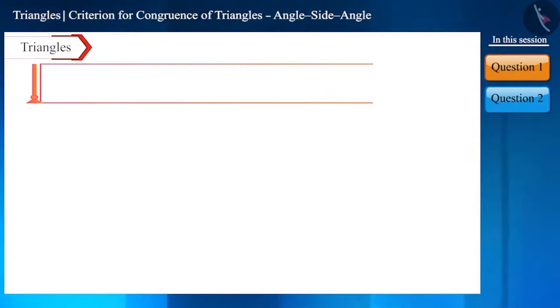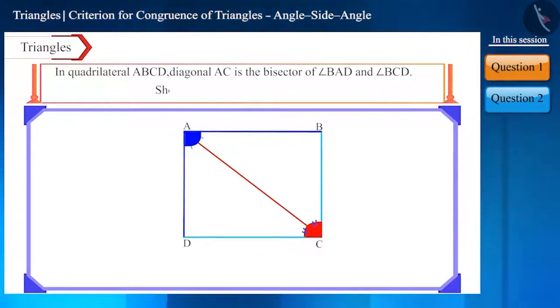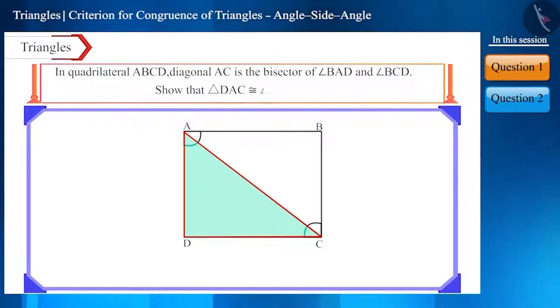The first question is: In quadrilateral ABCD, diagonal AC is the bisector of angle BAD and angle BCD. Show that triangle DAC is congruent to triangle BAC.